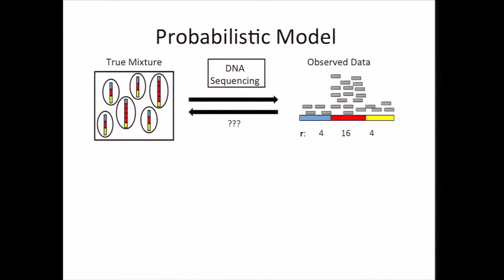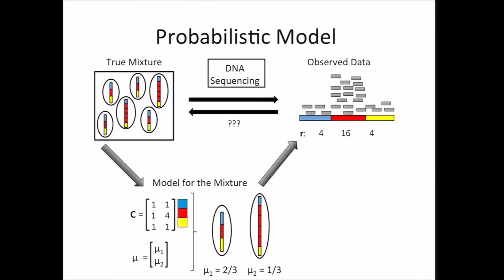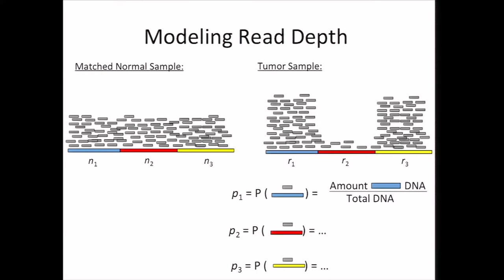We're going to do this by first parameterizing our true mixture using two parameters. The first parameter is what we call our interval count matrix C. In C, the columns are integer values that represent the number of copies of each genomic interval in each subpopulation in the sample. Our second parameter is what we call a genome mixing vector mu, which describes the proportion of the different subpopulations in our mixture. So if we know C and mu, we'd like to be able to infer something about our observed read depth information. Under typical assumptions, we assume that our reads are sampled uniformly across the genomes in our sample. We observe that the probability of any read aligning to any particular interval is proportional to the amount of DNA from that interval in the entire tumor sample.